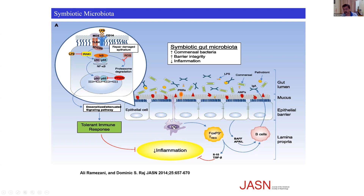Only the beneficial dendritic cells come into the picture, and as Dr. Vikas has elaborated, these dendritic cells stimulate T regulatory cells. T regulatory cells secrete interleukin-10 and TGF-beta, which have anti-inflammatory properties, leading to decreased inflammatory state. Chronic kidney disease is a state of little more chronic inflammation, and with symbiotic gut microbiota, the NF-kappa-B pathway leads to a tolerogenic immune response and diminished inflammation.